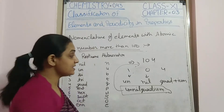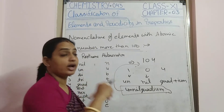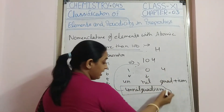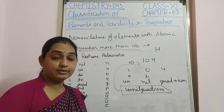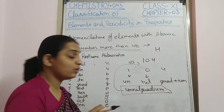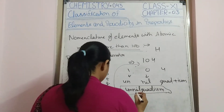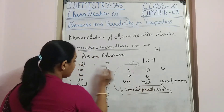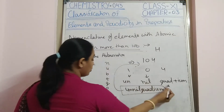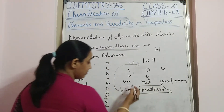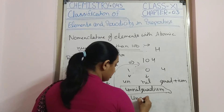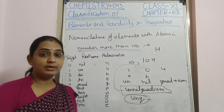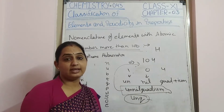For the symbol, just as hydrogen is represented as H, we take the first letter of each root name. 'Un' gives U, 'nil' gives n, 'quad' gives q. So the symbol for element 104 is Unq.